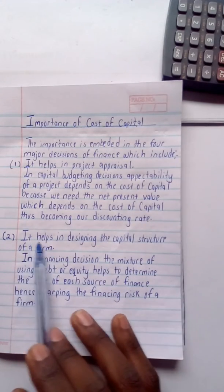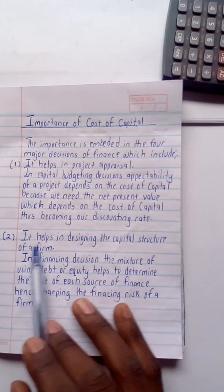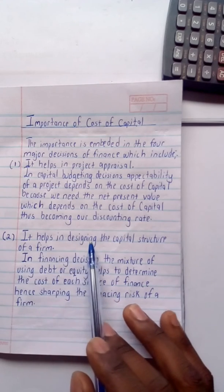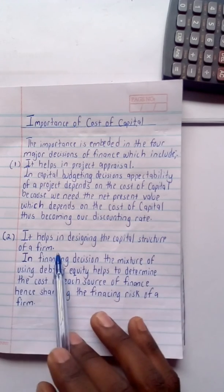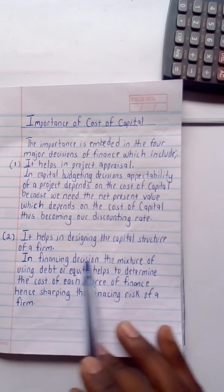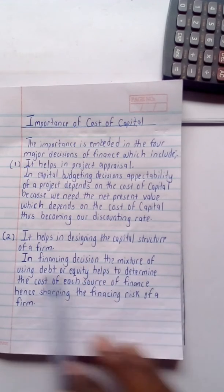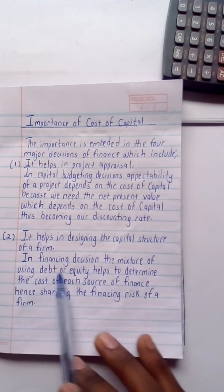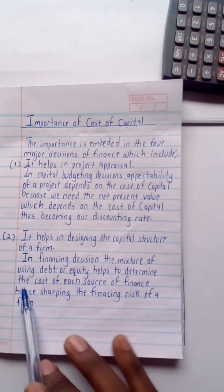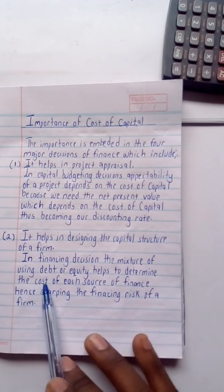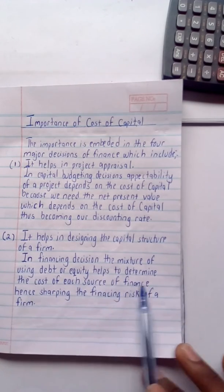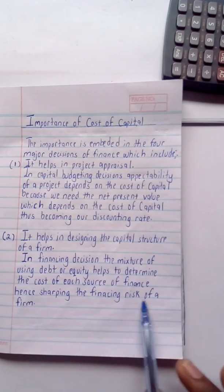Moving on to another importance, that is to do with the financing decision. It helps in designing the capital structure of a firm. In the financing decision, the mixture of using debt or equity helps to determine the cost of each source of finance, hence shaping the financing risk of a firm.